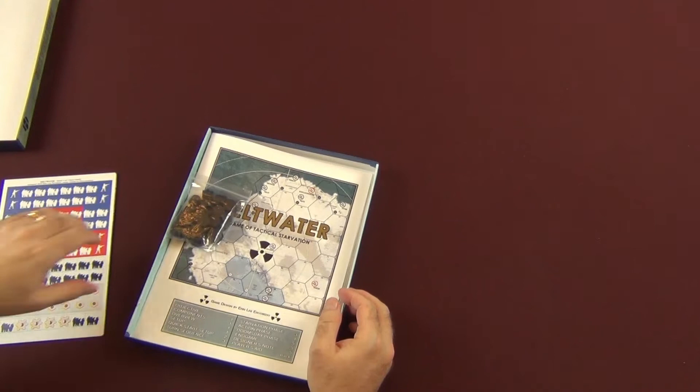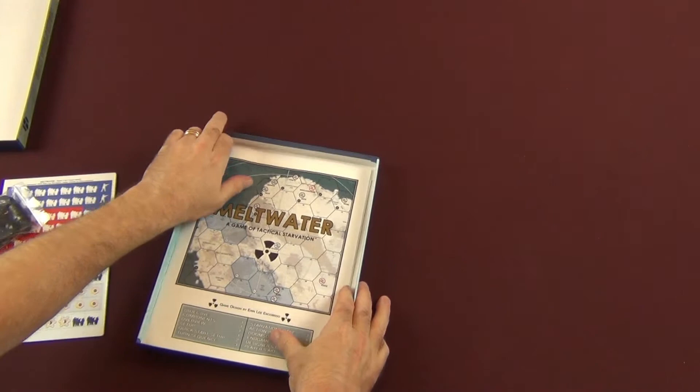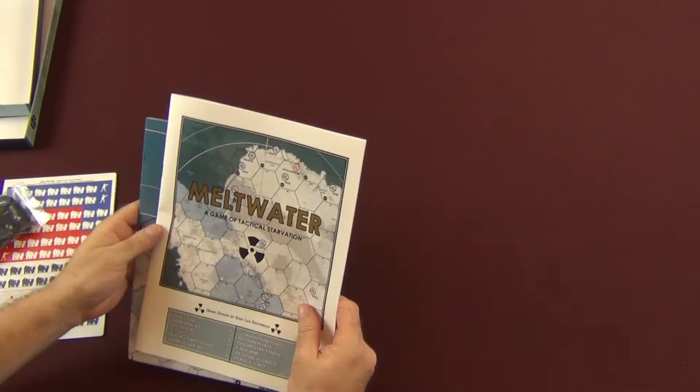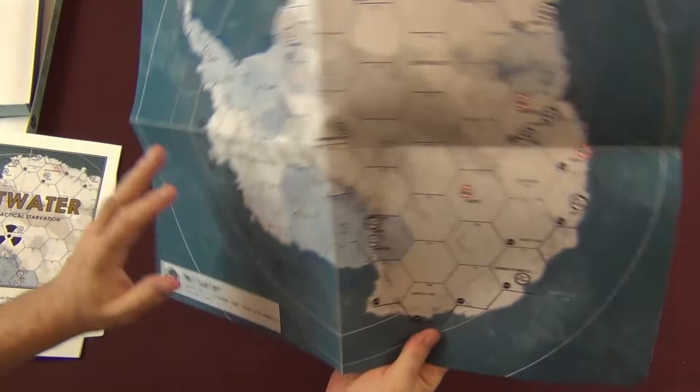We've got our 88 counters, our doomsday deck, these are our radiation tokens, and we have our manual and our map. Let's open up the map so you guys can get a look at that.